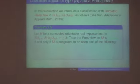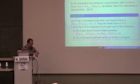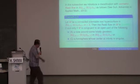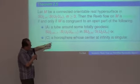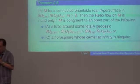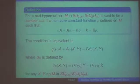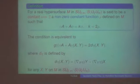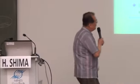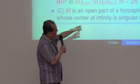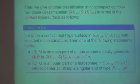Also when you consider contact hypersurfaces in complex two-plane Grassmannian, another kind of horosphere — the red one — is another kind of contact hypersurface. So, finally, I want to mention just one more point: recently we have classified hypersurfaces in the complex quadric, but until now there is no study on hypersurfaces in complex quadric with isometric Reeb flow.